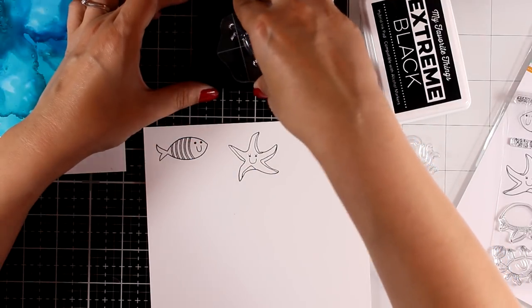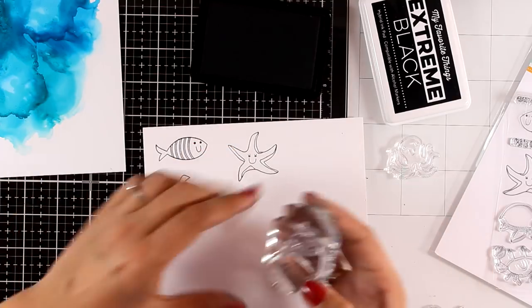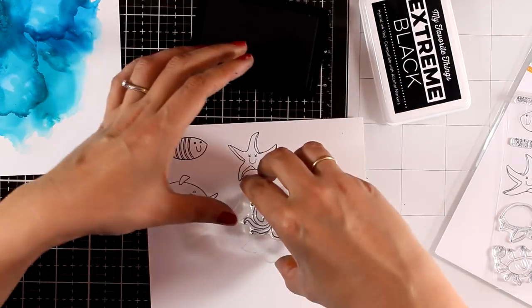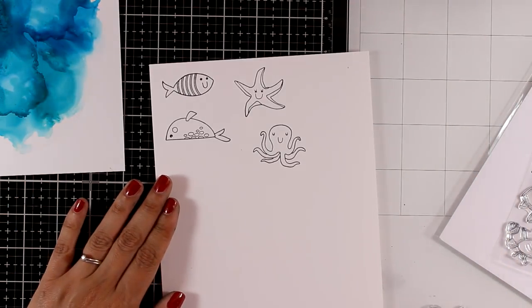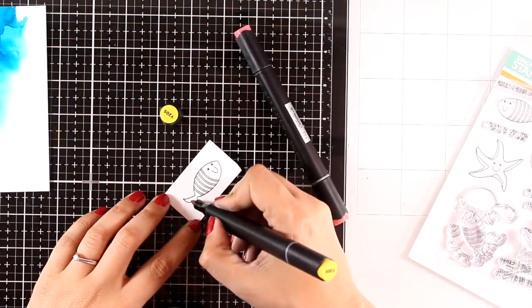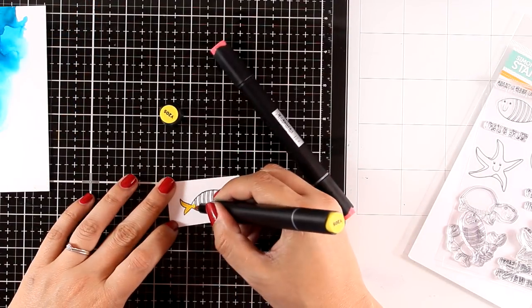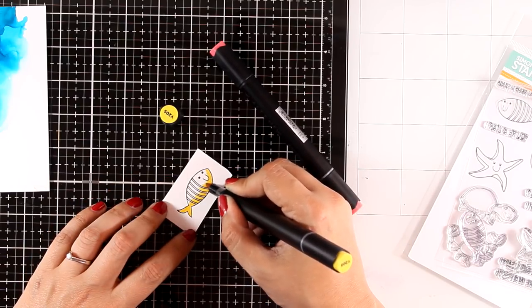Now I stamped a bunch of images but I ended up using the octopus, the fish, and the whale. I am using my alcohol markers, these are by Altenew, to color all the images and I'm making sure that I'm using contrasting colors so that all those images will stand out nicely on top of the blue background.